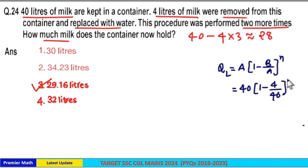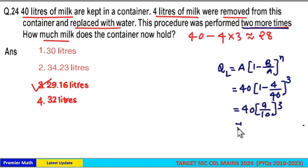This process repeated 3 times - that is, initial first time plus 2 more times equals 3 times. Now this will become 40 times (1 minus 4/40), which becomes 36/40, which equals 9/10. This raised to power 3 is around 29, so option 3 is your answer. Now you can also